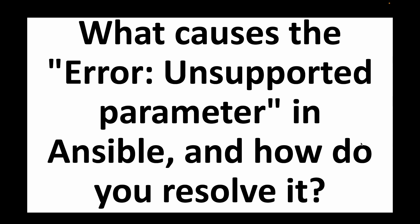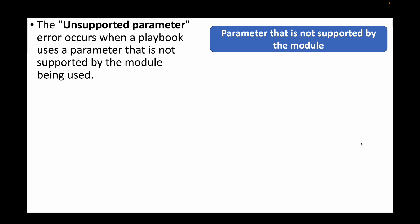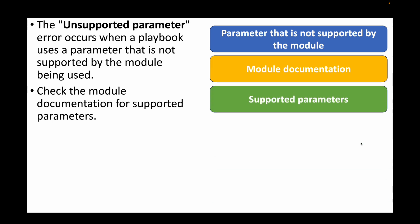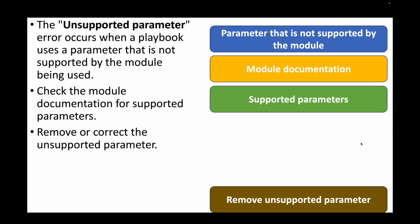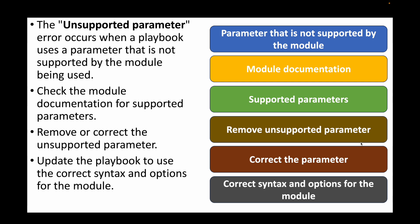The next question is: what causes the error 'unsupported parameter' in Ansible and how do you resolve it? This error occurs when you're using a parameter in the playbook that is not supported by the module. Check the module documentation to see what parameters it supports, remove or correct the unsupported parameters, and update the playbook to use the correct syntax and correct parameters for the module.